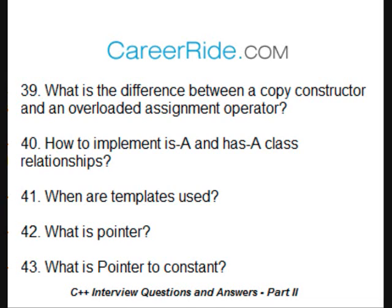How do you implement IsA and HasA class relationships? IsA is a class relationship which is a specialization of another class, used to describe the relationship with other classes. This relationship is seen in inheritance — for example, if there is an employee class with a person, then the employee is a person. HasA shows the relationship between classes where a class can contain instances of another class — for example, the employee class has a relationship with the salary class.